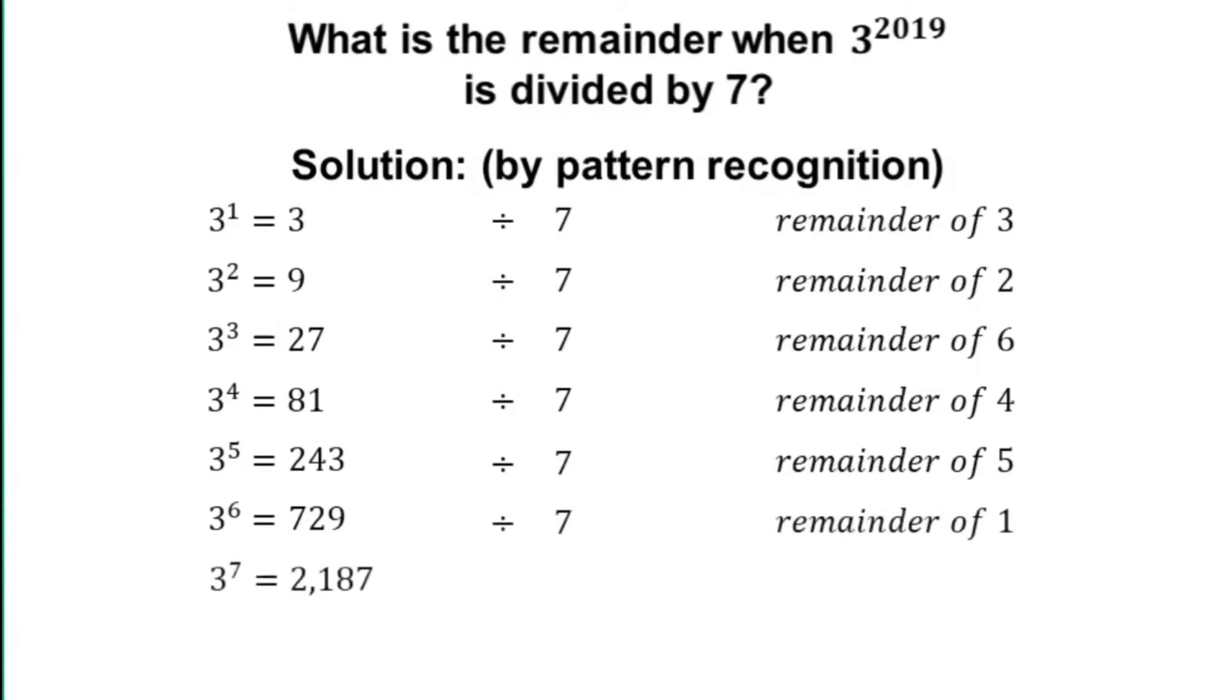3 to the power of 7 equals 2,187, which divided by 7 leaves a remainder of 3. 3 to the power of 8 equals 6,561, which divided by 7 leaves a remainder of 2, and so on.